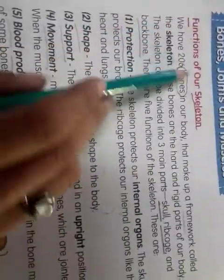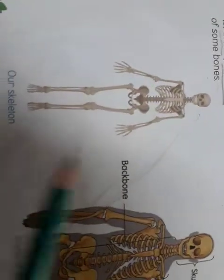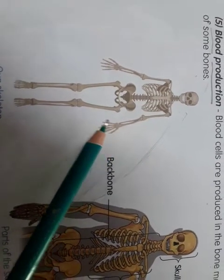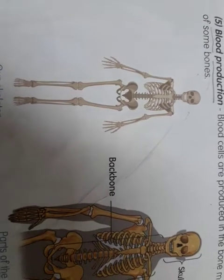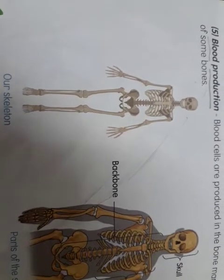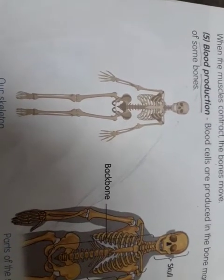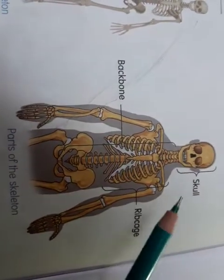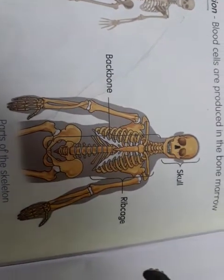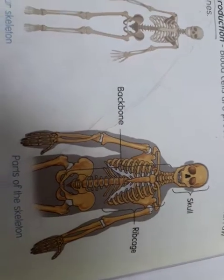The name of block 9 is 'Bones, Joints and Muscles.' Lesson number one is functions of our skeleton. A skeleton is a framework of bones — we have 206 bones in our body that make up the skeleton. The skeleton is divided into three main parts: skull, ribcage, and backbone. There are five functions of the skeleton.